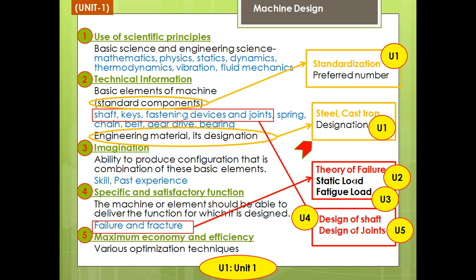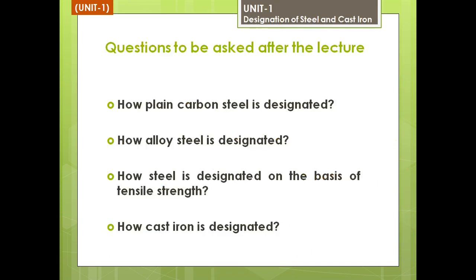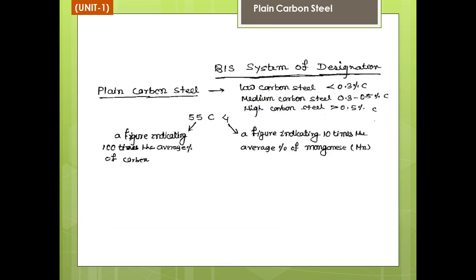The steel may be of two types: plain carbon steel or alloy steel. The designation of plain carbon steel is different, and the designation rule of alloy steel is different. First, let us see plain carbon steel under the BIS system — Bureau of Indian Standards. The plain carbon steel may be of three types: low carbon steel, medium carbon steel, and high carbon steel.